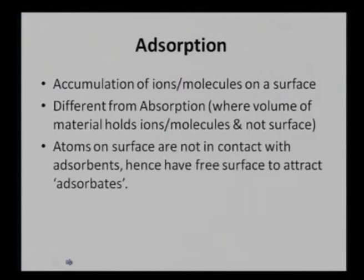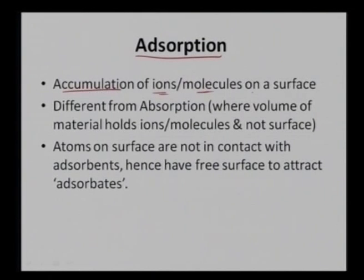In this lecture, we will learn about surface adsorption and isotherms. Surface adsorption is one of the very critical phenomena in any particular processing or catalysis activity. Adsorption is defined as the accumulation of ions or molecules on a surface. It is one of the very critical parameters in deciding the kinetics of a particular process, because depending on how many ions or molecules are adsorbed on a surface, they tend to react, form some species, or precipitate on the surface to result in a variety of properties.